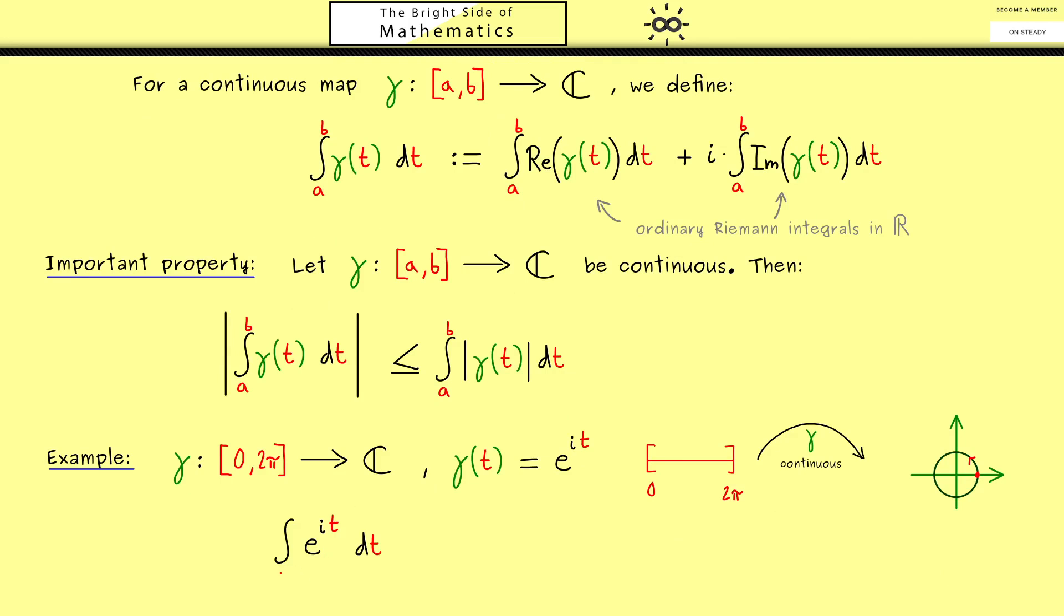Then in the next step let's calculate this integral here. In other words we have the integral of the exponential function of it and maybe let's do it for arbitrary a and b. Now by definition we know we first have to integrate the real part which is the cosine of t. And then we have plus i the integral of the imaginary part of the exponential function of it, which is as you should know the sine of t.